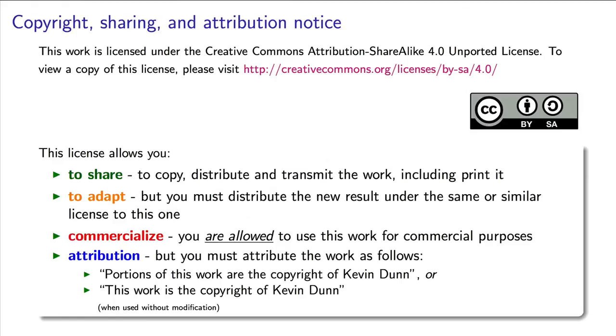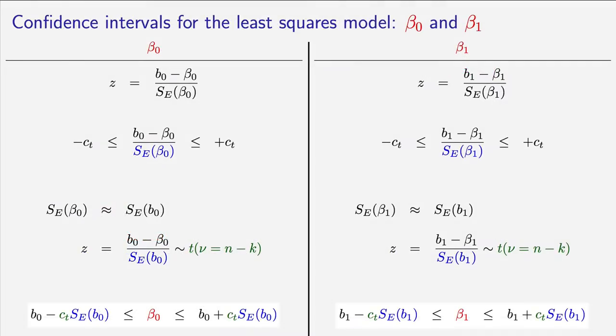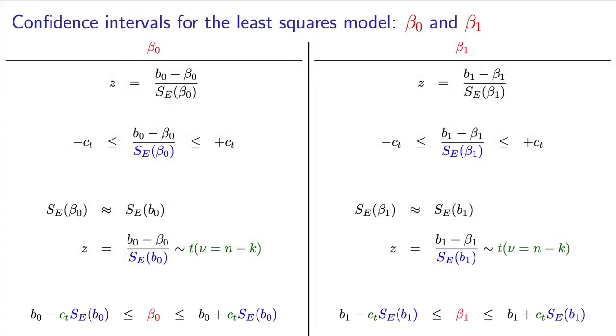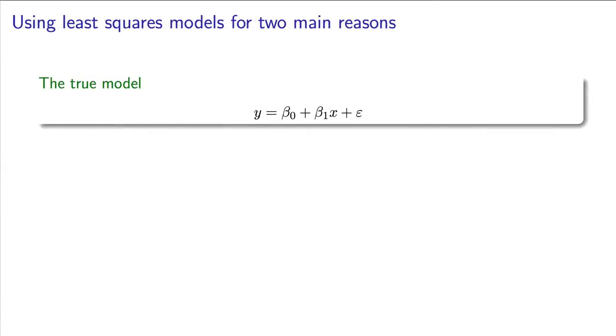In the prior class, we looked at calculating confidence intervals for the parameters of beta0 and beta1. These provide an interval within which we expect to find the true value of that population parameter with a given level of confidence.